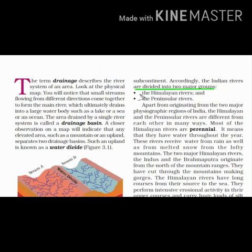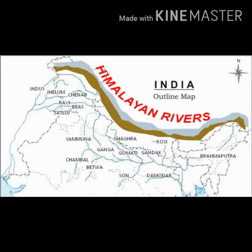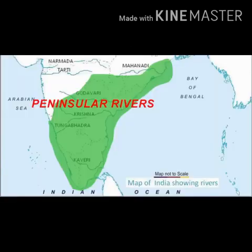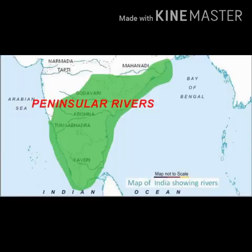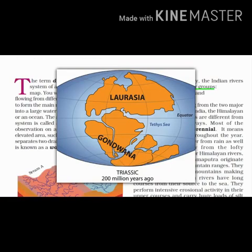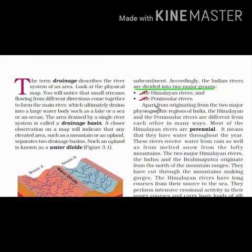The Indian rivers are divided into two major groups: the Himalayan rivers and the peninsular rivers. The Himalayan rivers originate in the Himalayas, primarily due to the melting of ice and glaciers, with rain also being a source. On the other hand, peninsular rivers originate in the peninsula region, which was part of the Gondwana land. Therefore, the rivers here are much older than the Himalayan ones. Since there is no ice and glacier over here, rainfall is the ultimate source of water behind the flow of rivers.